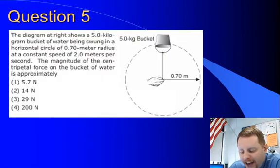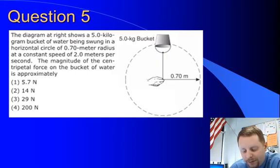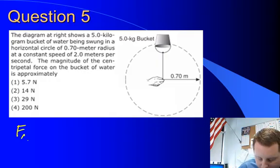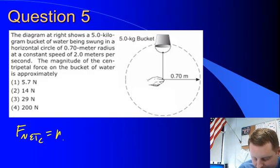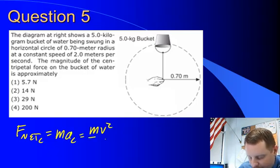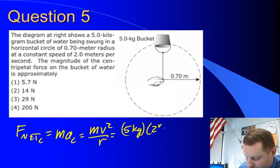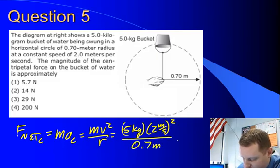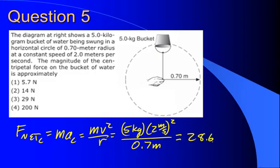The diagram shows a five kilogram bucket of water being swung in a horizontal circle of 0.7 meter radius at a speed of two meters per second. We want to find the magnitude of the centripetal force on the bucket of water. Net force in the centripetal direction is MV squared over R: mass is five kilograms, velocity is two meters per second squared, divided by a radius of 0.7 meters, for a total of about 28.6 Newtons. The centripetal force is caused by the string attached to the bucket — we call that the force of tension.